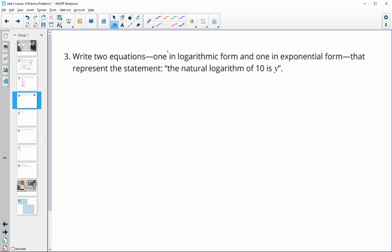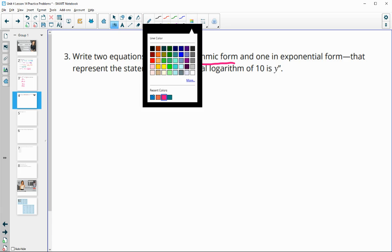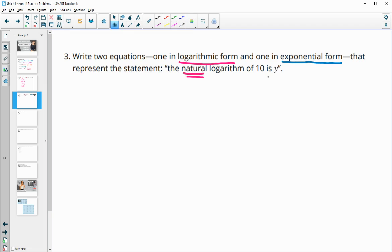Number three, write two equations, one in logarithmic form and one in exponential form that represent this statement: the natural log of 10 is y. So natural log we write as ln, so ln of 10 equals y. And the exponential form would be the base which is e, so e to the y equals 10.